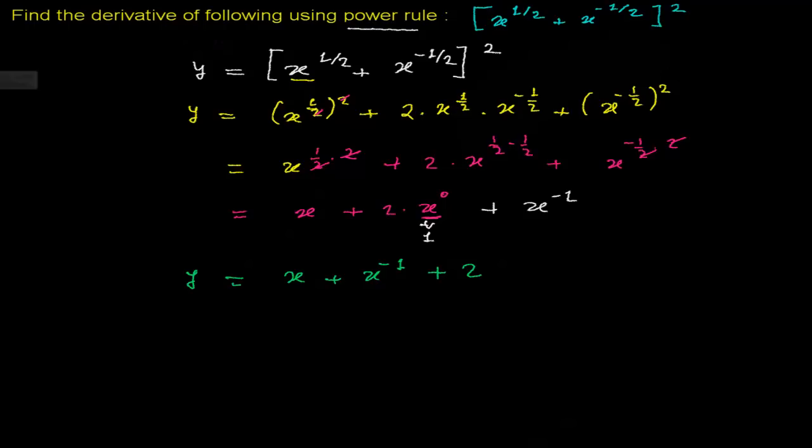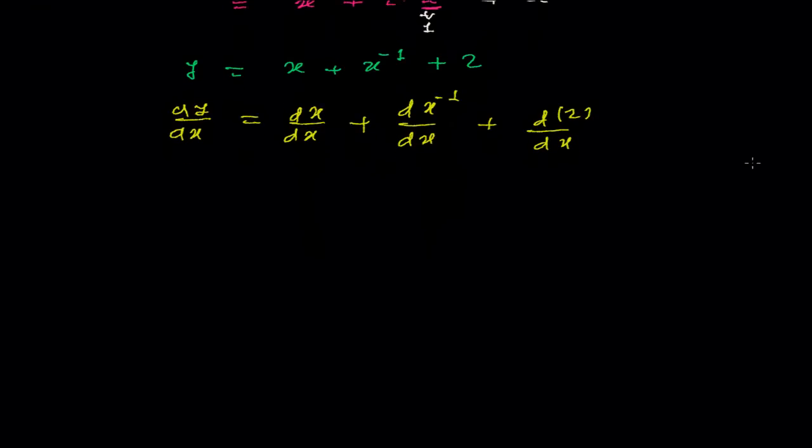Now let's find the derivative of this. Differentiating both sides with respect to x, we'll be getting dy/dx. The derivative of x, then derivative of x to the power minus 1, and derivative of a constant term is zero.